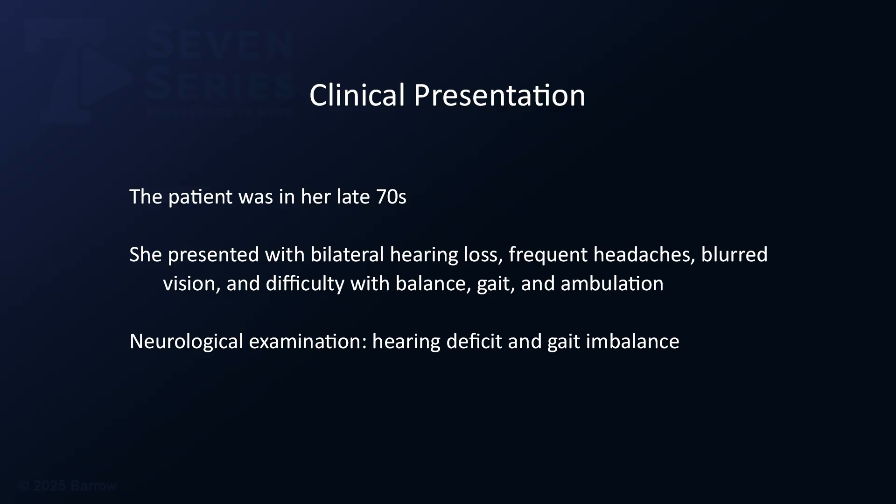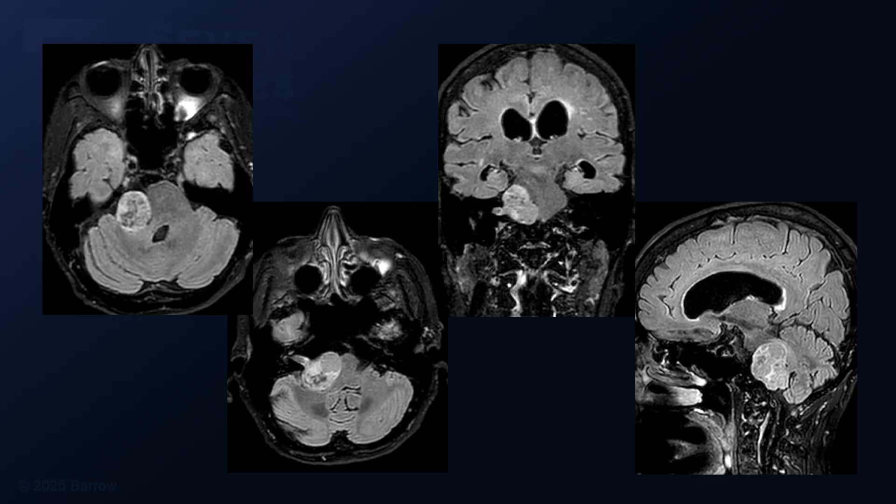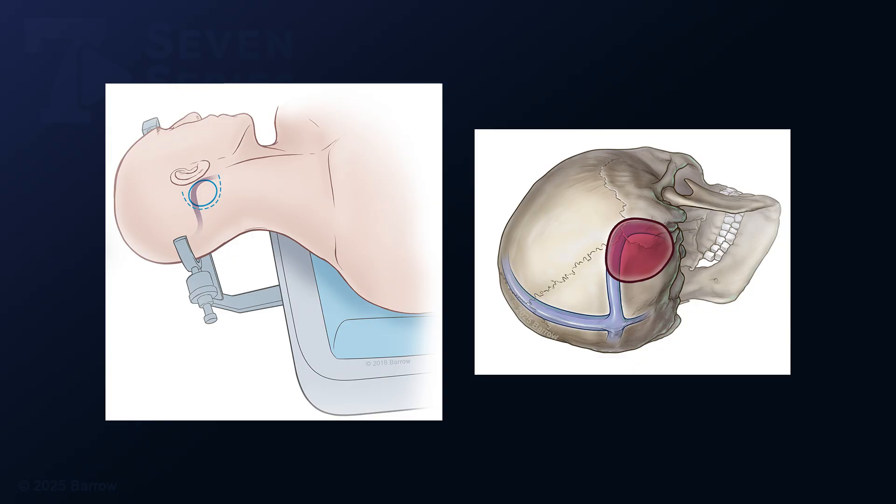On exam, she had a hearing deficit and gait imbalance. Her MR images show this large cystic vestibular schwannoma that extends from the internal auditory canal and fills the cerebellopontine cistern with indentation of the brain stem. It measures nearly three centimeters in diameter. A retrosigmoid craniotomy was selected for the approach given that the tumor did not extend deeply into the internal auditory canal.